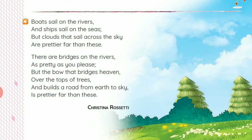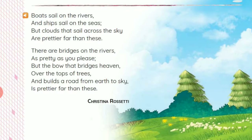So children, in this poem the poet tells us about boats, ships, clouds, bridges, and the rainbow. She says that boats that sail on the rivers and ships that sail on the seas are beautiful, but the clouds that sail across the sky are prettier than boats and ships. In the first stanza, the poet shows that natural things are more beautiful than man-made things. In the second stanza, the poetess wants to say that bridges across the rivers are beautiful, but according to the poet, bridges are not as beautiful as the rainbow.